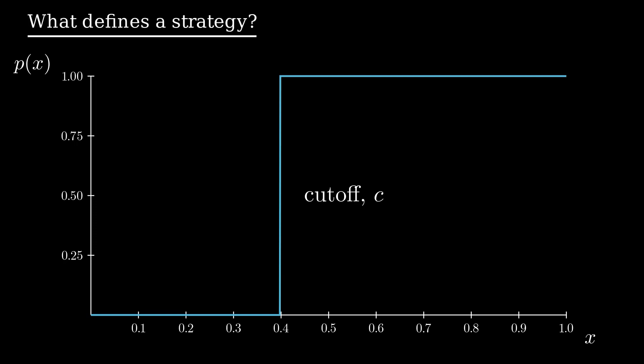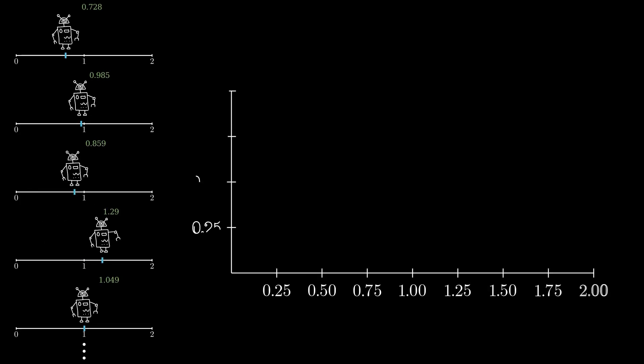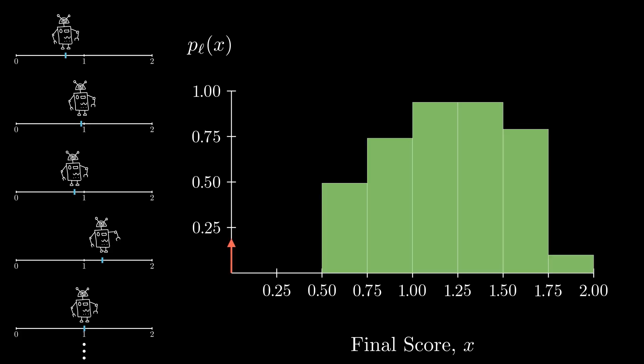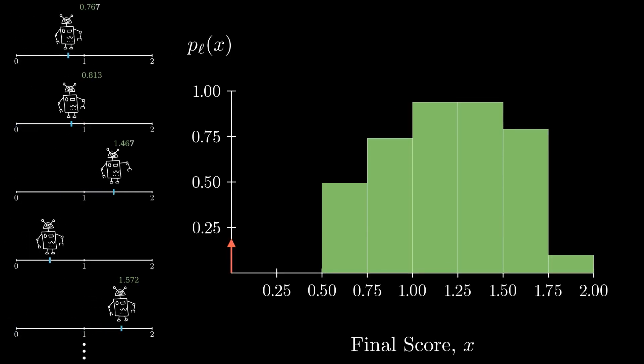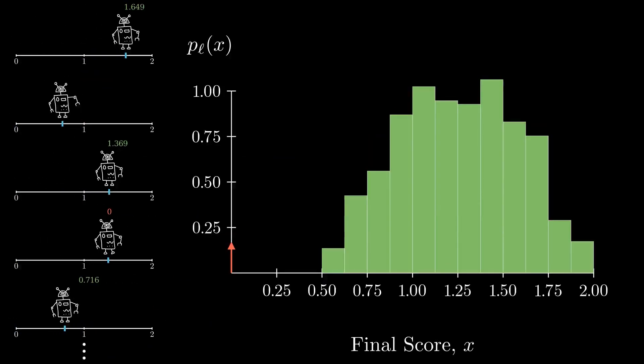Now that we know how to define a strategy, my preferred method for approaching a problem is always to try and gain intuition through simulation. To do just that, let's assume we employ a cutoff of one half, and run several random long jumps so we can observe the frequency of where we land, shown in green, and how often we fault, shown by the red arrow at zero.